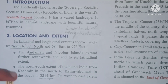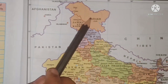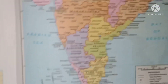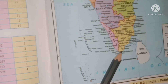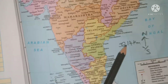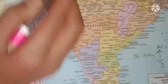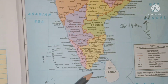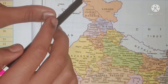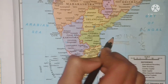Here is Kashmir in the north, and this is the southernmost tip — Kanyakumari. From Kashmir to Kanyakumari, the extent is 3,214 kilometers. This is the north-south extent.